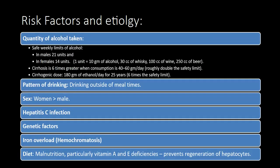Risk factors and etiology. Regarding quantity of alcohol taken, safe weekly limits of alcohol in males is 21 units and in females it is 14 units. One unit equals 10 grams of alcohol, 30 cubic centimeters of whiskey, 100 cubic centimeters of wine, or 250 cubic centimeters of beer. Cirrhosis risk is 6 times greater when consumption is 40–60 grams per day, roughly double the safety limit.